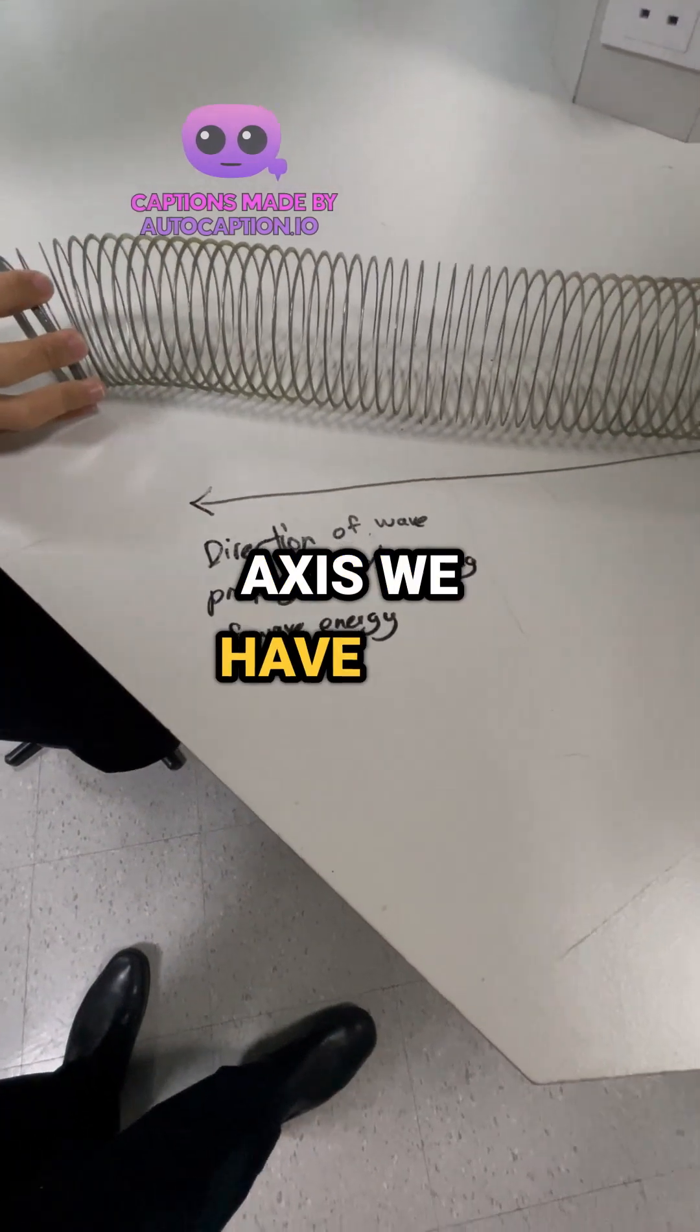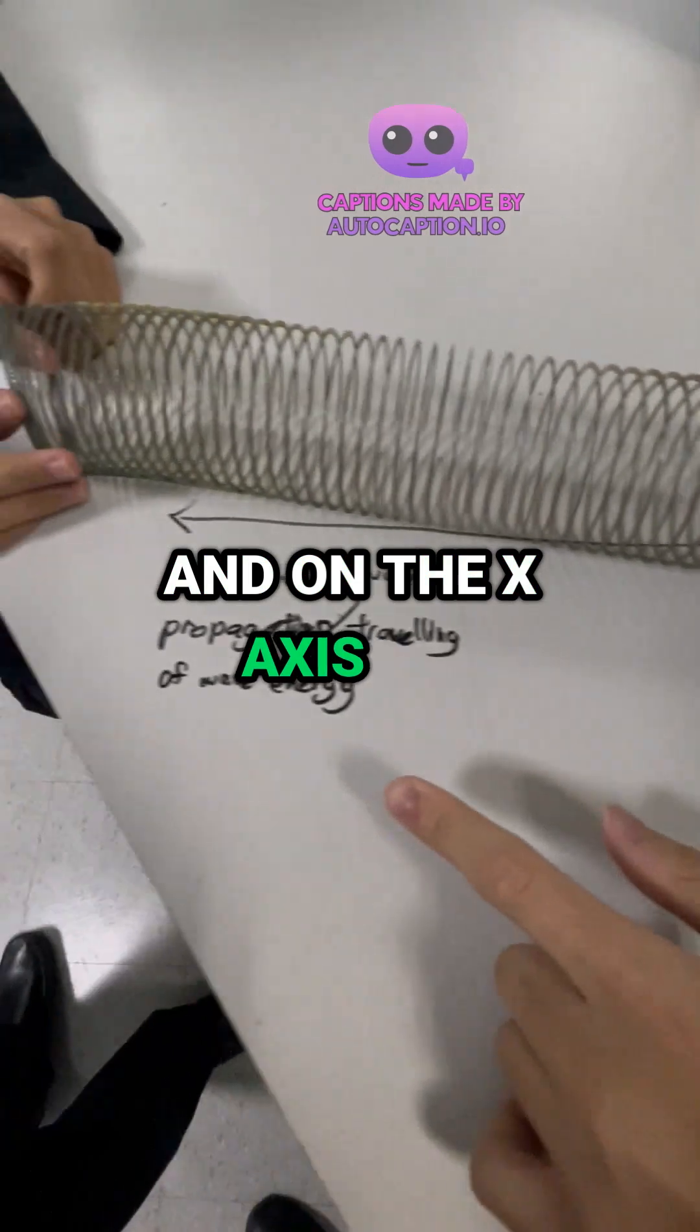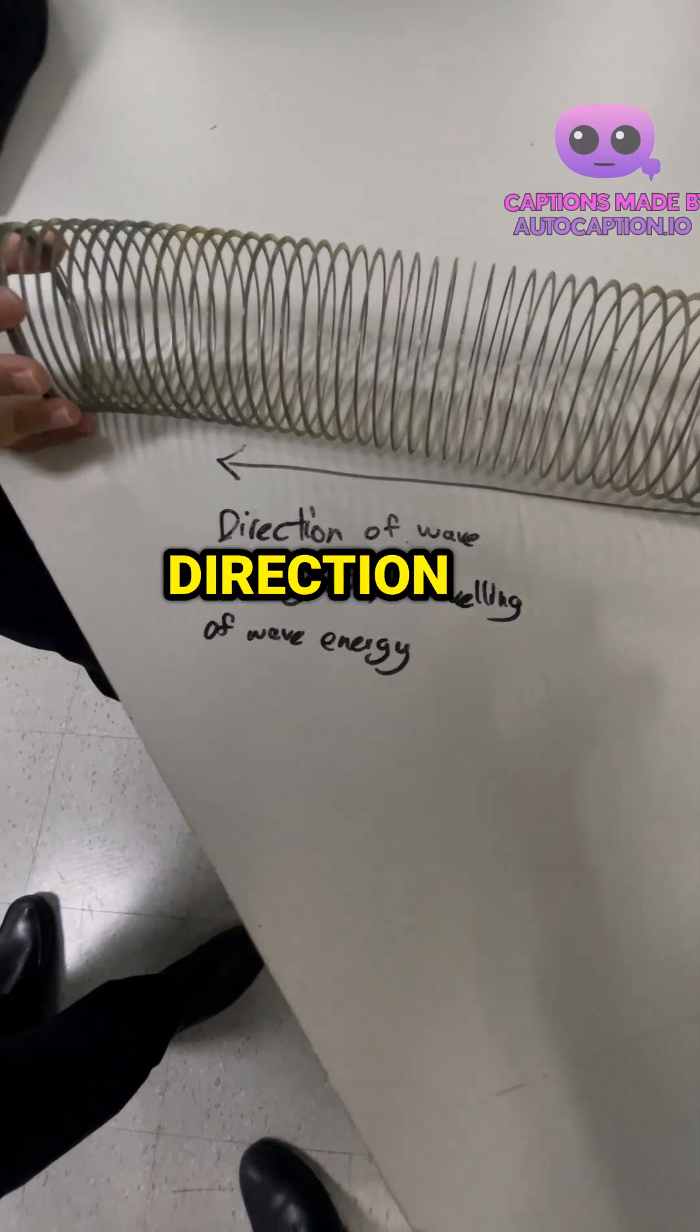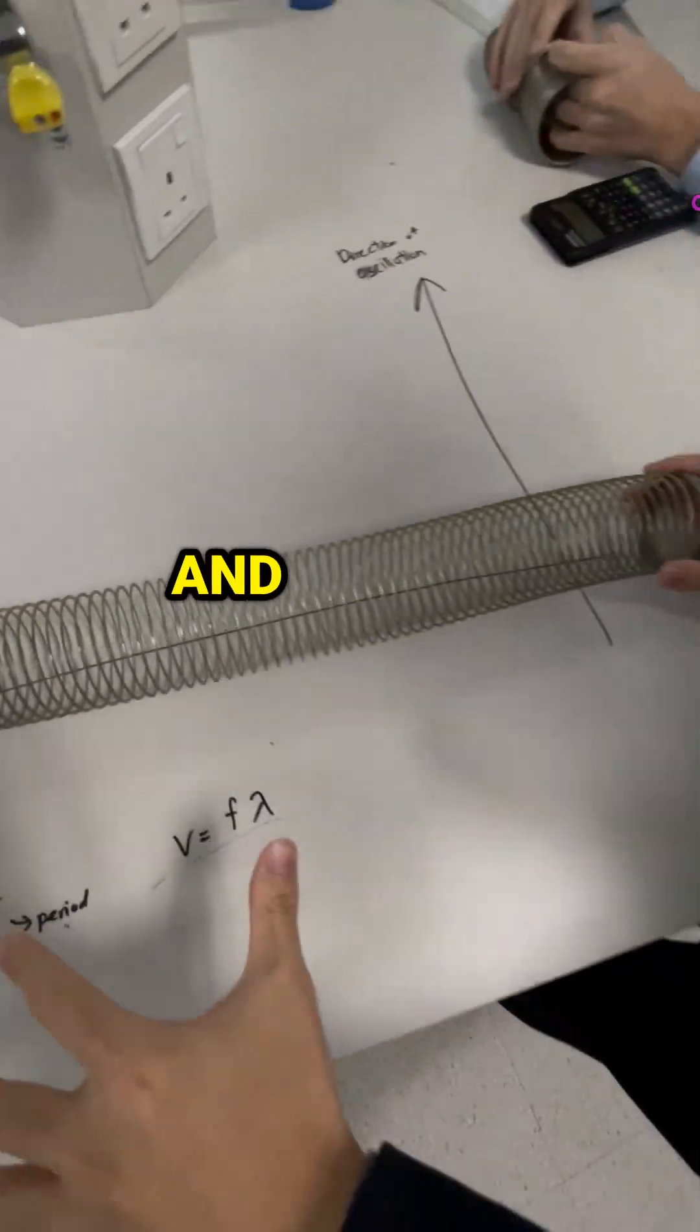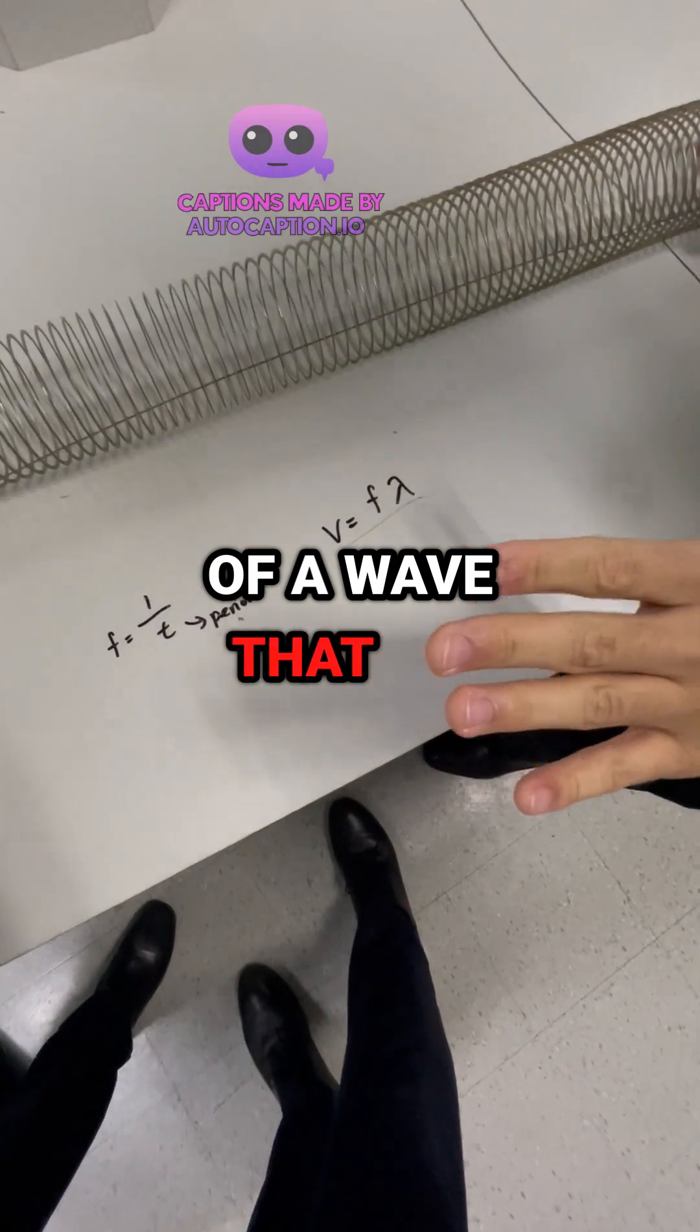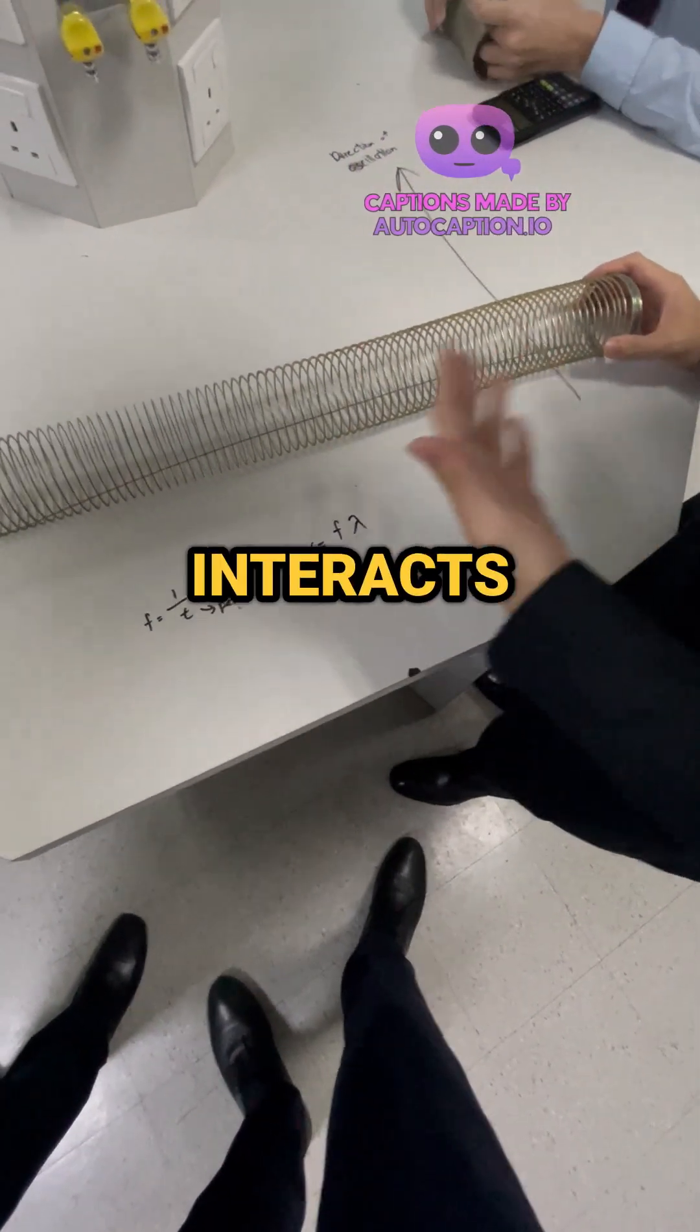On the y-axis we have the direction of oscillation of the wave, and on the x-axis we have the direction of wave propagation. It's also the direction where the wave energy is traveling. Here we have some simple equations of a wave that we will experiment with to see how it interacts.